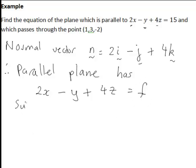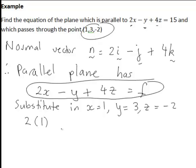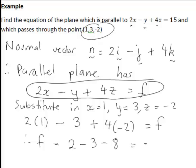we would then substitute in the point on the plane, so since our point was 1, 3, negative 2, that means X equals 1, Y equals 3, Z equals negative 2. So 2 times 1 minus 3 plus 4 times negative 2 equal to the constant F. And this then works out to be F is equal to 2 minus 3 minus 8, which is equal to negative 9.